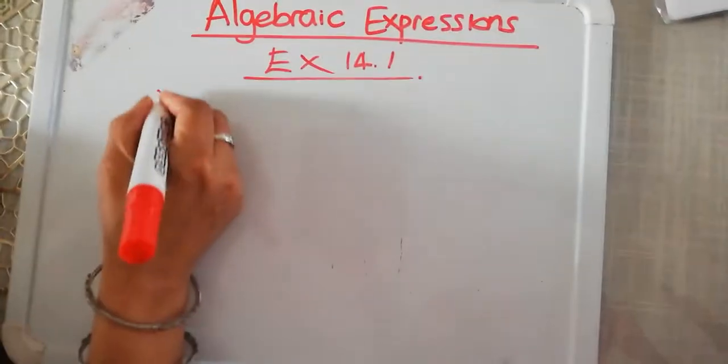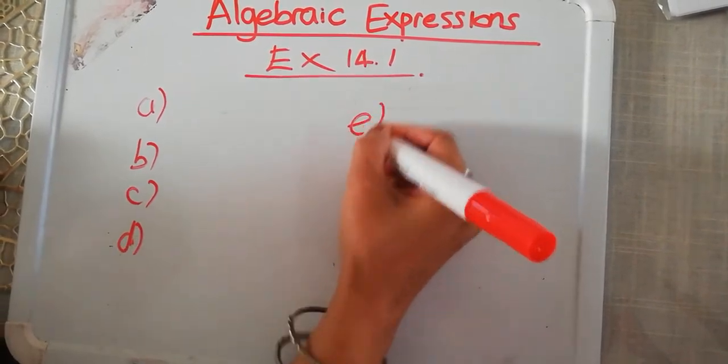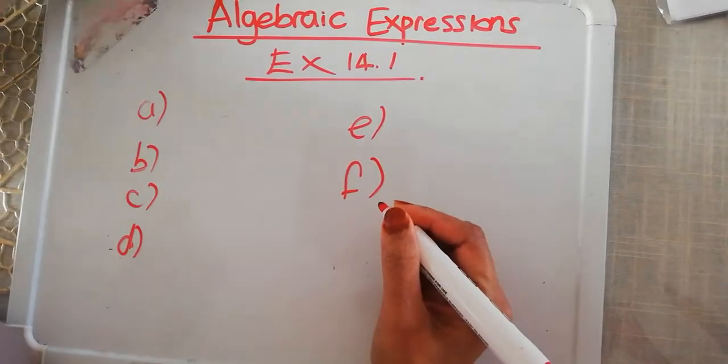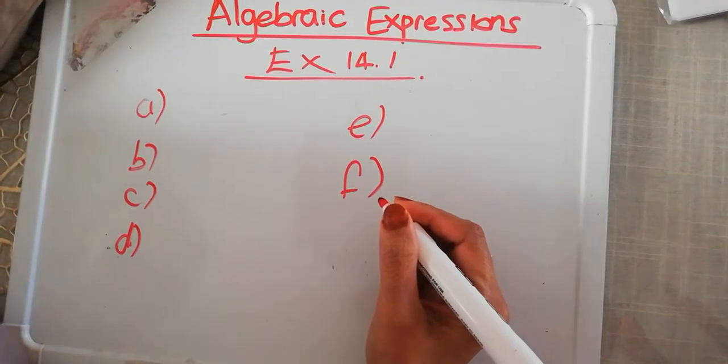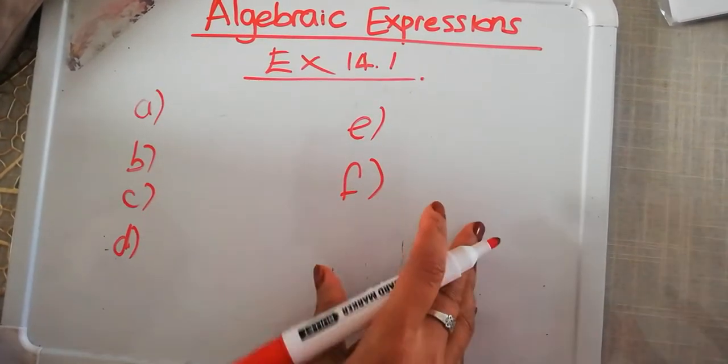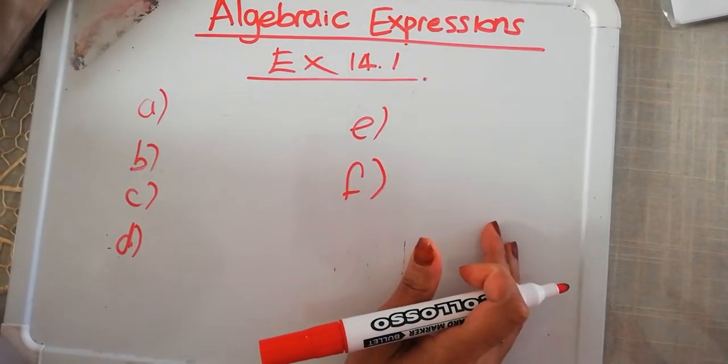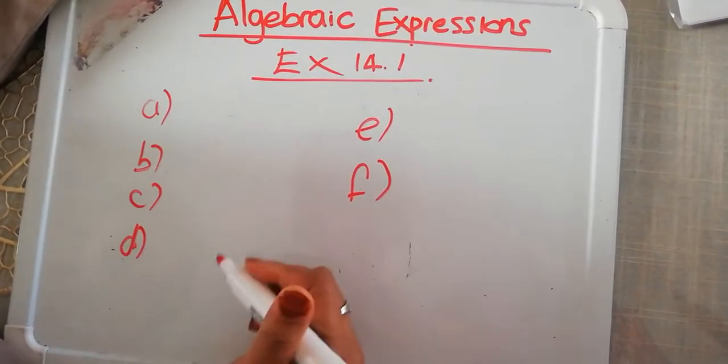If you look at number one, A, B, C, D, E, and F. It says copy the table and write the phrase as an algebraic expression. So let's first do the keywords.